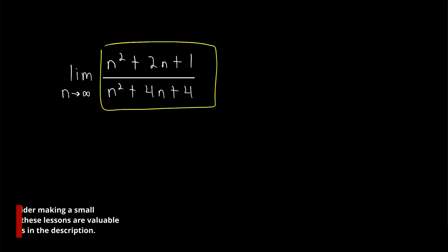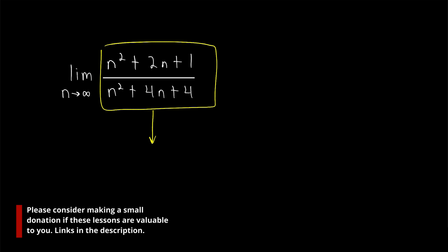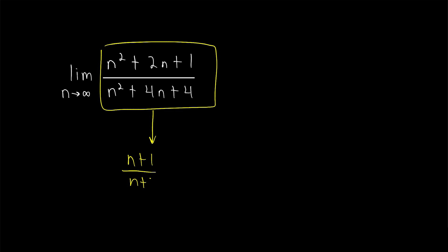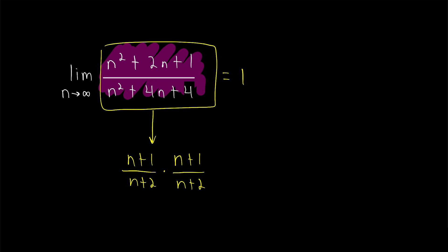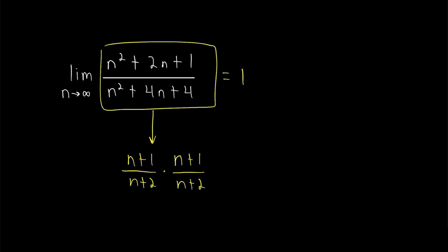Wouldn't it be great if we could take a sequence like this, notice that it equals (n+1)/(n+2) times (n+1)/(n+2), each converging to 1, and thus assume that its limit must be 1 times 1, or 1? That way we wouldn't have to go through the time-consuming process of proving that a sequence converges using the definition. But we don't know if limits of sequences behave in this nice way unless we prove it.